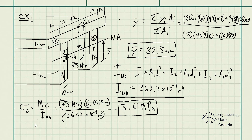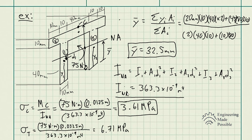Now let's solve for the bottom portion, which is in tension. Here C is the distance from the neutral axis to the bottom of the beam — which equals y-bar, or 32.5 millimeters. Plugging it in, we get 6.71 megapascals at the bottom where the beam is in tension. For non-symmetric cross sections, the tensile and compressive stresses are not equal — in this case the compressive stress of 3.61 MPa is less than the tensile stress of 6.71 MPa.